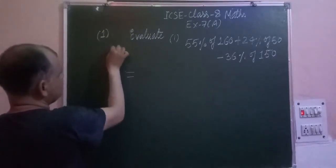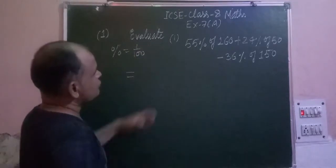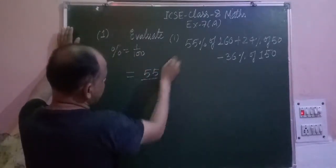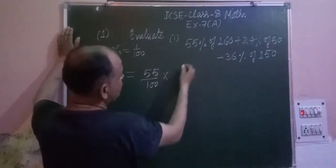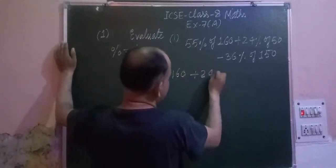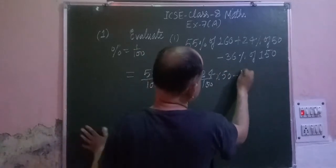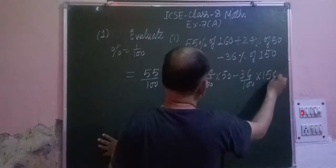If you want to know, the percentage sign means divided by 100, so we write it as 55 upon 100 into 160 plus 24 upon 100 of 50 minus 36 upon 100 of 150.